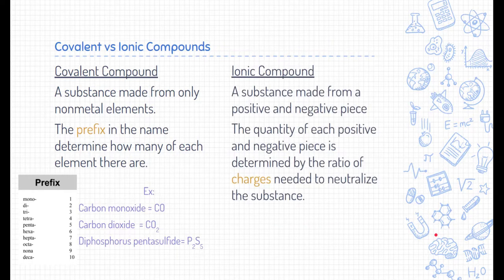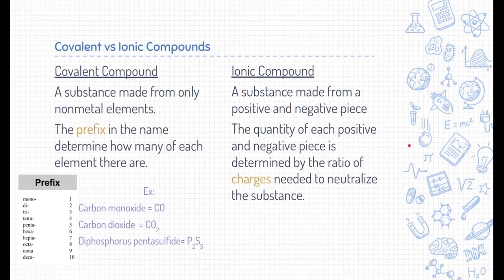The other type of compound is an ionic compound. These are substances made of multiple atoms, but they typically have a positive and a negative piece attached to each other. Usually the positive piece is a metal and the negative piece is one or more non-metals. The quantity of each positive and negative piece is determined by the ratio of charges needed to neutralize the substance as a whole. That might seem complicated, but let's take a look at some examples.